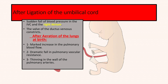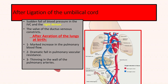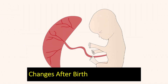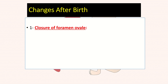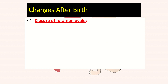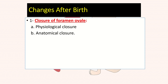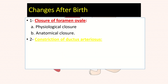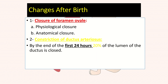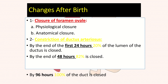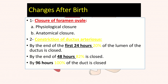There is also thinning of the walls of the pulmonary arteries. The major changes in fetal circulation after birth include: first, the closure of the foramen ovale — the defect between the two atria — which involves both physiological and anatomical closure. Additionally, there is constriction of the ductus arteriosus: by 24 hours, 20 percent of the lumen is closed; by 48 hours, about 82 percent is closed; and by 96 hours, 100 percent of the ductus is closed.